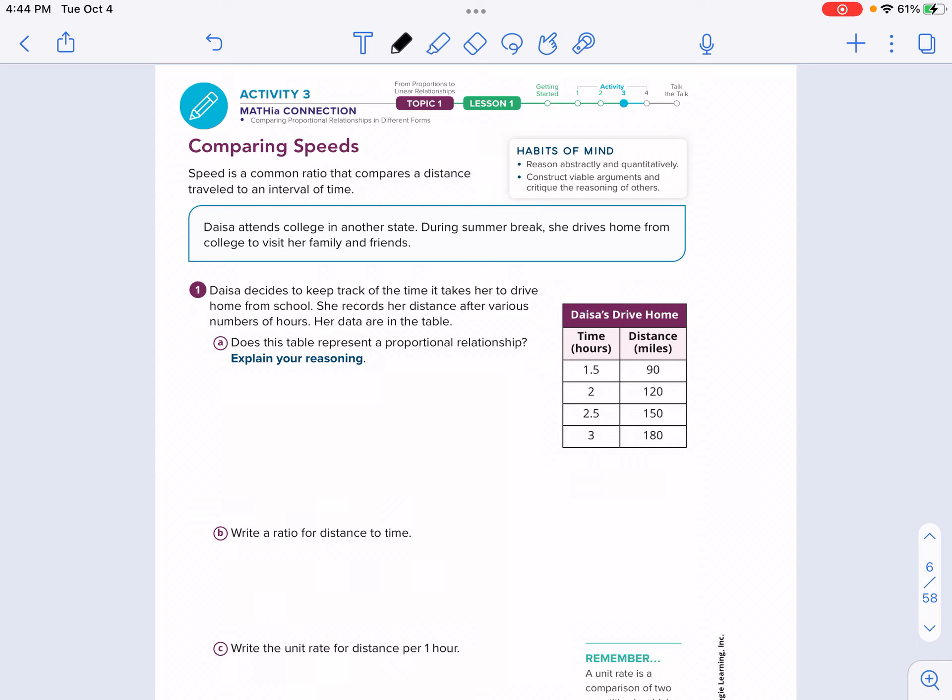Okay, so starting out, let's read the context here in this box. This is Daisy. Daisy attends college in another state. During summer break, she drives home from college to visit her family and friends. Number one, Daisy decides to keep track of time it takes her to drive home from school, and she records her distance after a various number of hours. Her data is on this table. Does the table represent a proportional relationship?